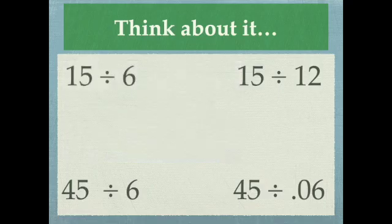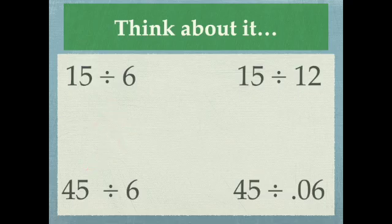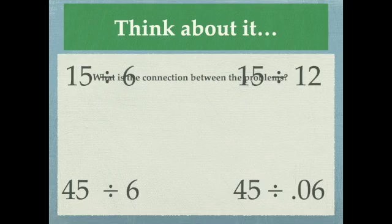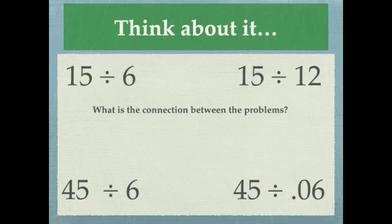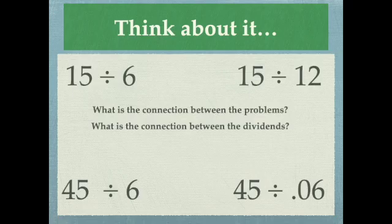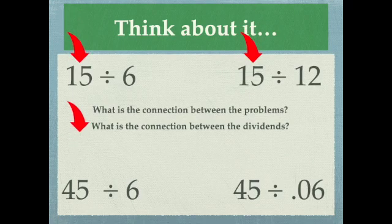We just have to break it down like this. Do you see a connection between these problems? I've got 15 divided by 6, I've got 15 divided by 12, and then there's this 45. Can you make a connection between the problems? What about a connection between the dividends? The dividend is the first number in a division problem, so I've got a 15, a 15, and a 45. Do you see a connection between those?